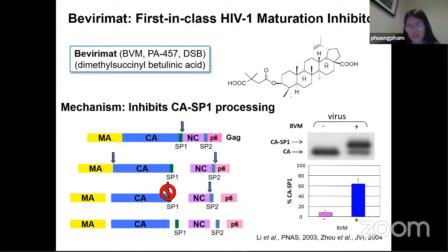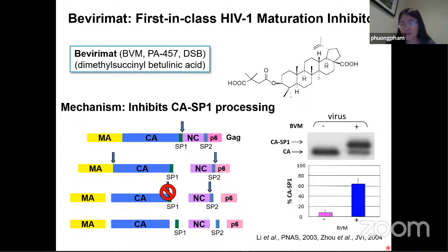What's shown on the slide is Bevirimat. This was the first-in-class HIV-1 maturation inhibitor. What it does is bind to the polyGAG protein at the capsid SP1 region. By binding to this region, it blocks protease from coming to this site and successfully cleaving the protein into its functional structures. Because of this blockage, what you get are non-infectious virion particles. On the right you see the gel as well as the graph, which depicts the effects of Bevirimat.